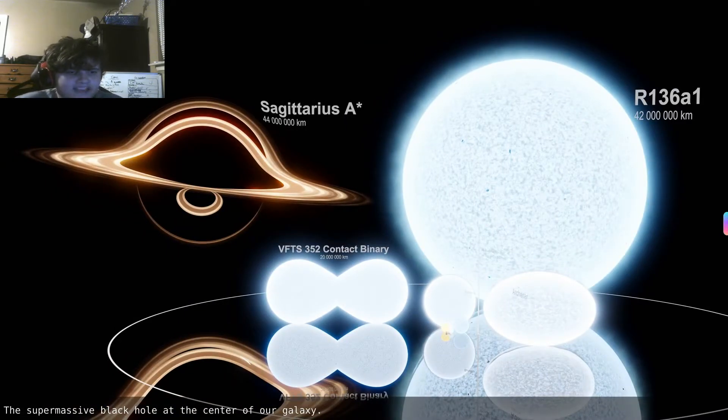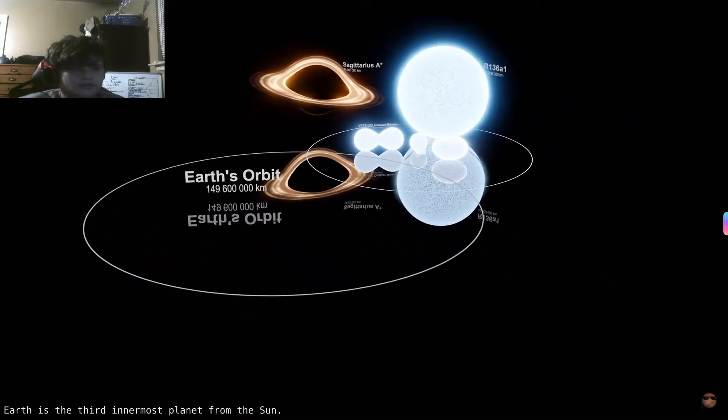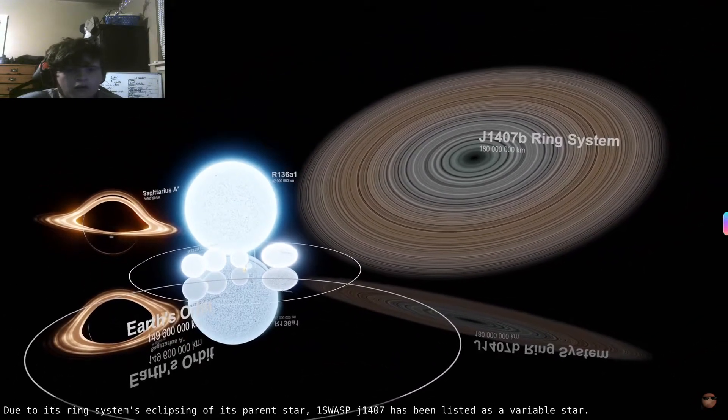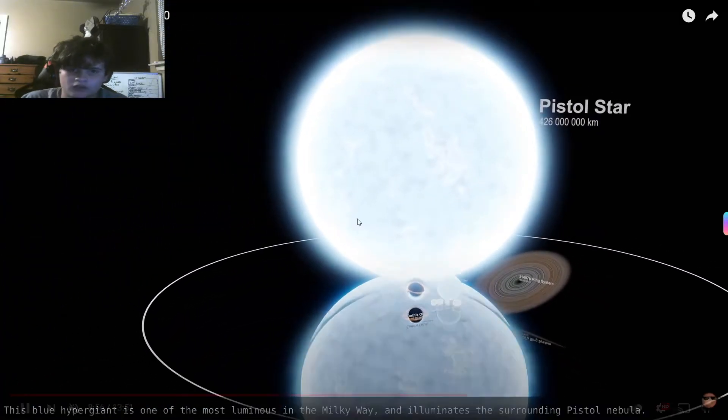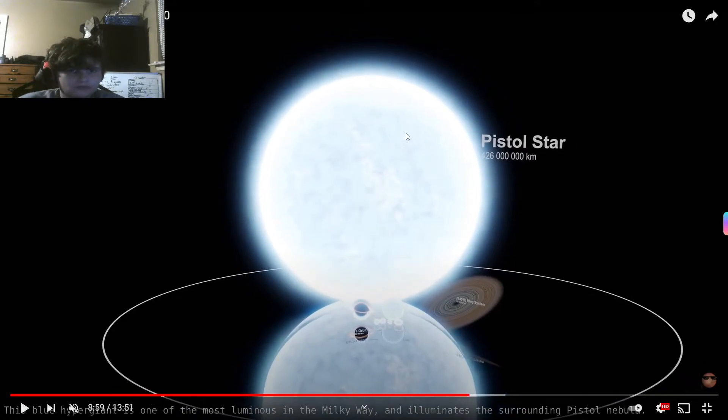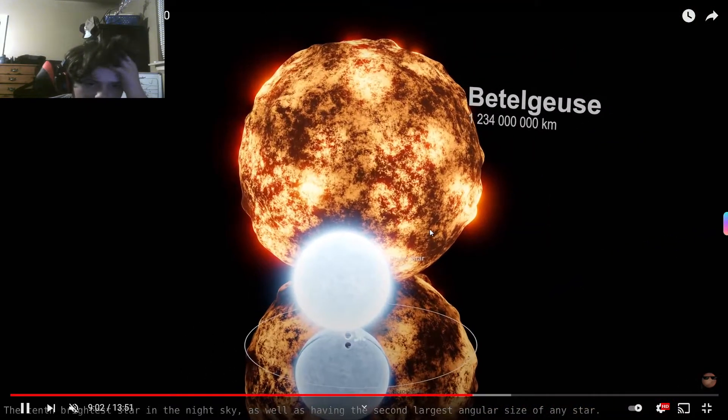Supermassive black hole at the center of our galaxy. Earth's orbit. Bro, hold on, we're way down there, we're like a pixel. Think about that. If we had this entire planet like an actual planet, and this was Africa, this was South America, North America, Asia, like oh my gosh, they'd be, oh my gosh dude.